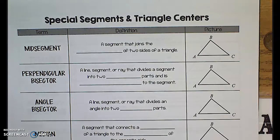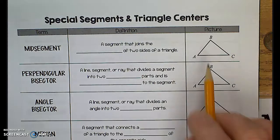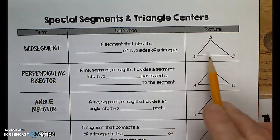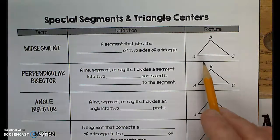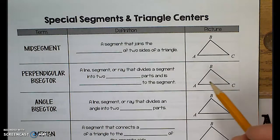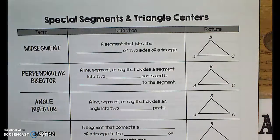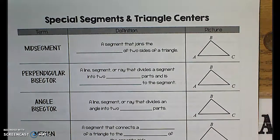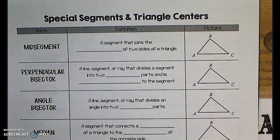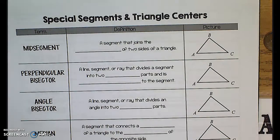We're studying different lines that we can draw within a triangle. We've already studied the lengths of sides and angles and used those to derive theorems about congruence and similarity. Now we're going to derive additional properties — some fun features of triangles — by drawing additional lines within them. The first one we're going to draw is the mid-segment.